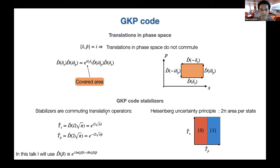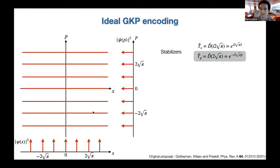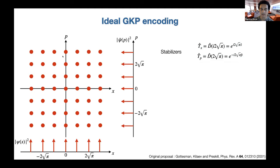One way to define the GKP code is through stabilizers which are displacements where the area covered by the two stabilizers is 4π. The Heisenberg uncertainty principle tells us we should have an area of 2π per state in phase space, and since we want to encode a qubit — two states — we need an area of 4π. The code space will be the simultaneous +1 eigenspace of these two stabilizers, living on the grid at all multiples of √π.